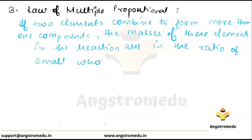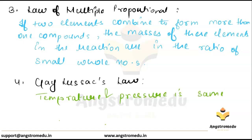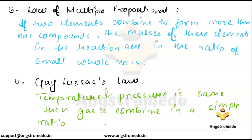Our next law is Gay-Lussac's law of gaseous volume. It states that when gases are produced or combined in a chemical reaction, they do so in a simple ratio by volume, when the gases are at the same temperature and pressure.